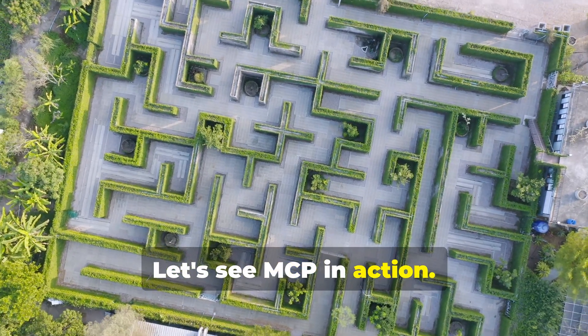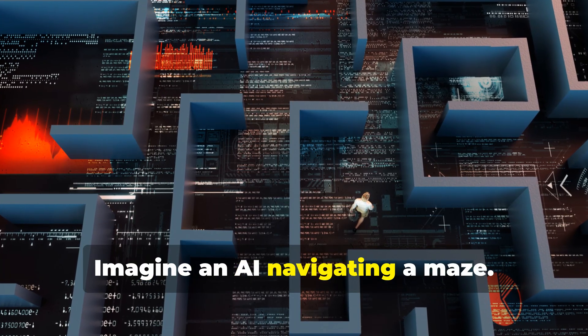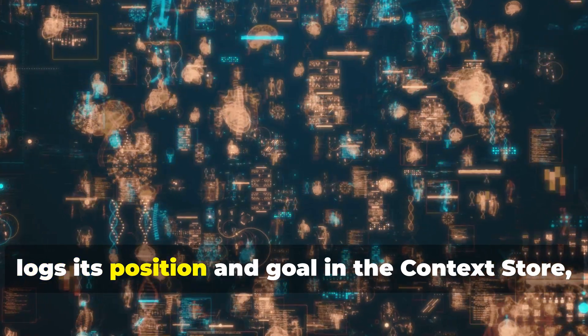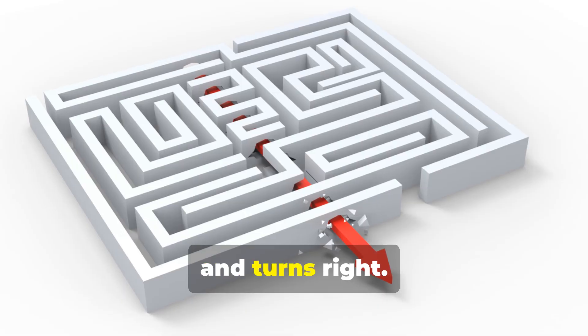Let's see MCP in action. Imagine an AI navigating a maze. It starts at junction A, logs its position and goal in the context store, and turns right.